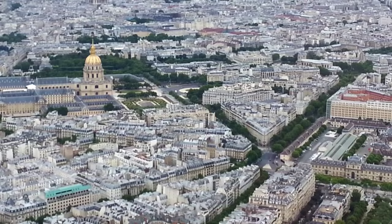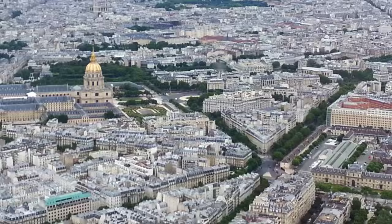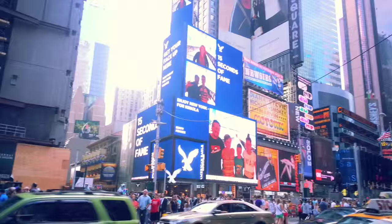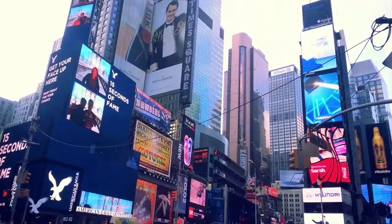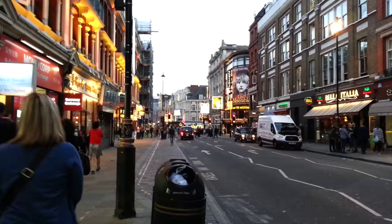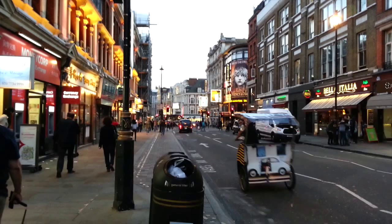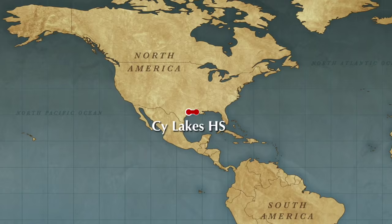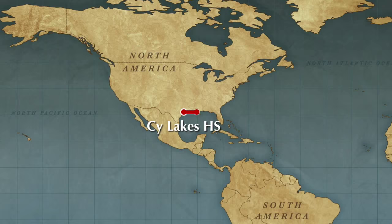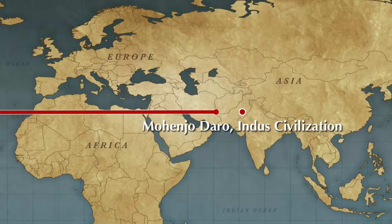Advanced cities also have permanent buildings, roads, and other infrastructure that make life more efficient and comfortable. Cities are the economic, social, and political heart of any civilization. Houston definitely meets these qualifications, and many cities in the ancient world did too. One of the best examples can be found in the Indus Valley, near modern-day India and Pakistan. Let's go check it out.